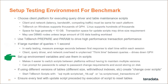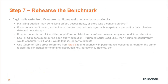Set up environment variables and use them in scripts — that will make it easier to switch scripts between platforms without maintaining multiple versions. Those scripts can prompt for passwords and adapt to password change requirements to avoid storing them on disk. If using different versions of tables — for example, different sizes with or without indexes — create changeover scripts. Then begin each TDBench script with that changeover script. Ensure that every test with an update script is preceded by an execution of the script to reset the tables. Next, you need to rehearse the benchmark, beginning with the serial test. You want to compare the runtimes and row counts versus production. The most common thing on the initial serial test is queries that fail due to missing objects, access rights, or errors in the SQL conversion.